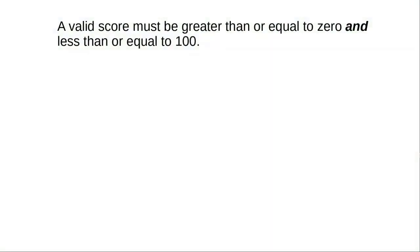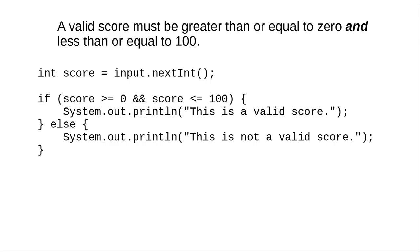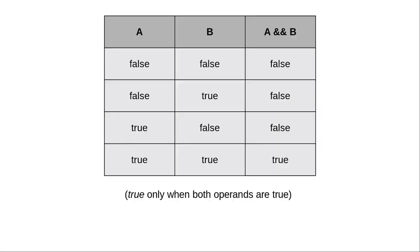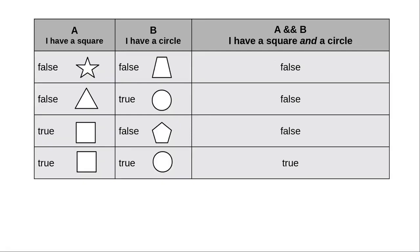Sometimes you need to test more than one condition at a time. For example, a valid score must be greater than or equal to zero and less than or equal to 100. Here's how you write that in Java: the AND is written with two ampersands in a row. For an AND to be true, both conditions must be true. Here's the truth table that shows how AND works. The only combination that works — having both a square and a circle — is when both conditions are true.